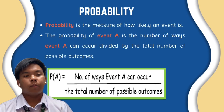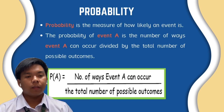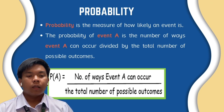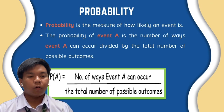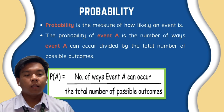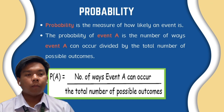Probability is the measure of how likely an event is. The probability of event A is the number of ways event A can occur divided by the total number of possible outcomes. For example, when rolling a die and getting one dot, the number of ways that can occur is 1, and the total number of possible outcomes is 6. Therefore, the probability is 1 over 6.